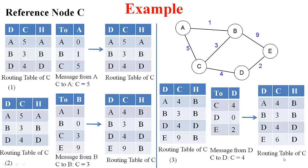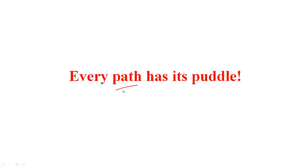Let me flash this also in the hope that it will aid your memory. Moving on — every path has its puddle. We have seen this again and again, and this statement is even more relevant since we are dealing with routing algorithms that capture paths. So what is the problem? What are your thoughts? What can potentially go wrong with the algorithm we have covered so far?